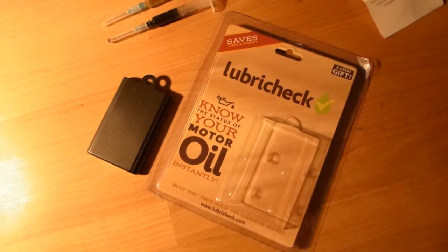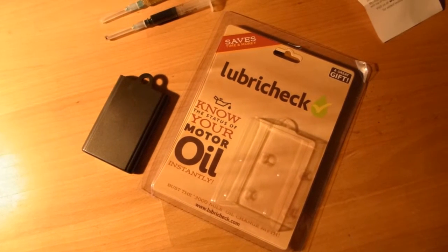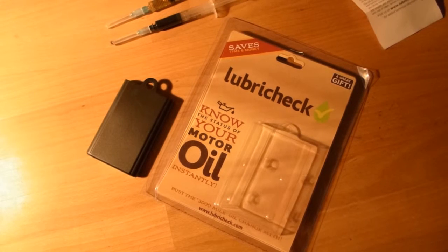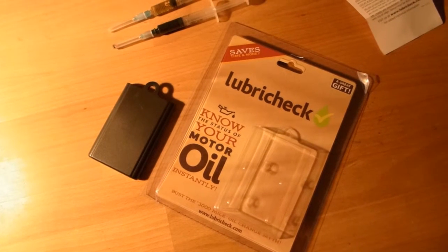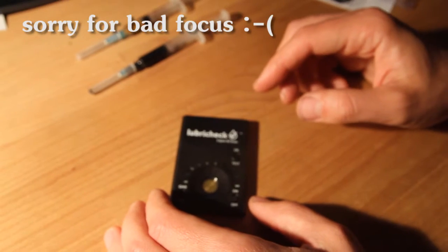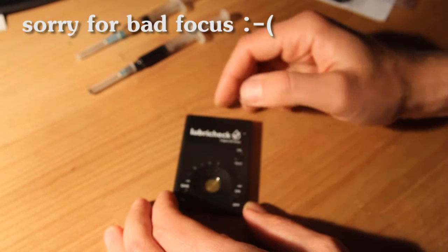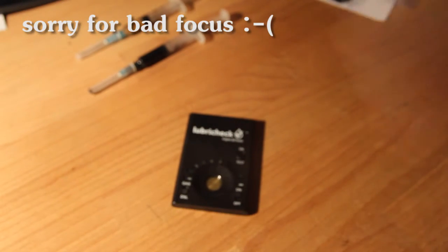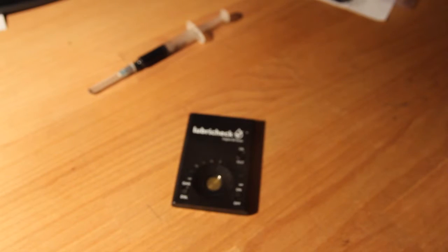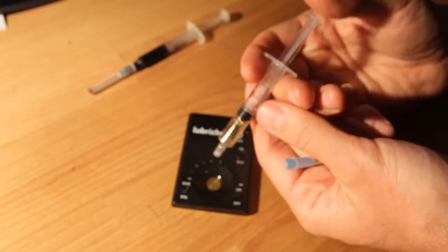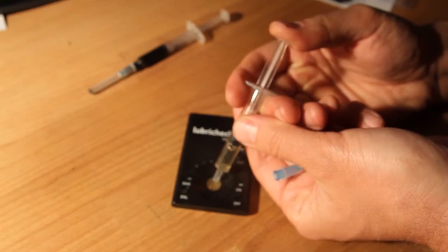Today we'll get two measurement points - a clean one and after 15,000 kilometers. For the first initial measurement, I'm turning it on, waiting a couple of seconds, then putting a couple of droplets in the cup.